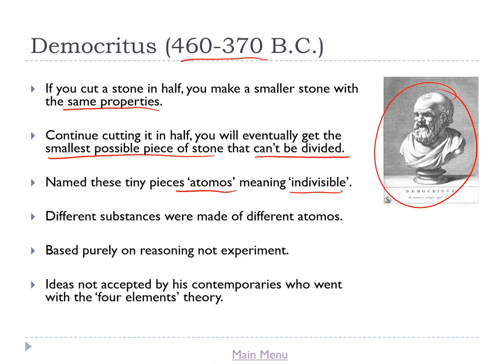Democritus reasoned that different substances were made of different Atomos, each with their own properties, which explained why different substances behave differently. Significantly, this was not science but philosophy — he did not base his reasoning on experiments, it was purely based on thought. His ideas were not widely accepted by his contemporaries, who instead went with the four elements theory of earth, wind, fire and water, which we now know is complete nonsense.